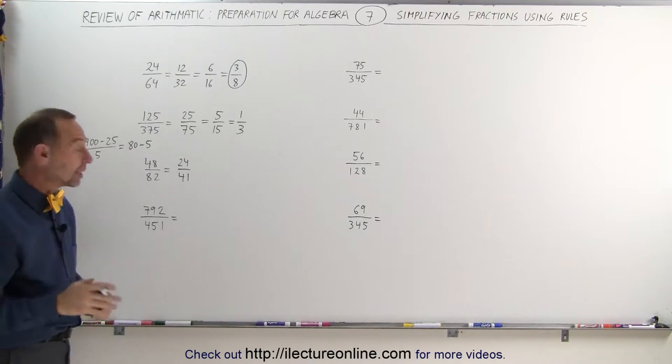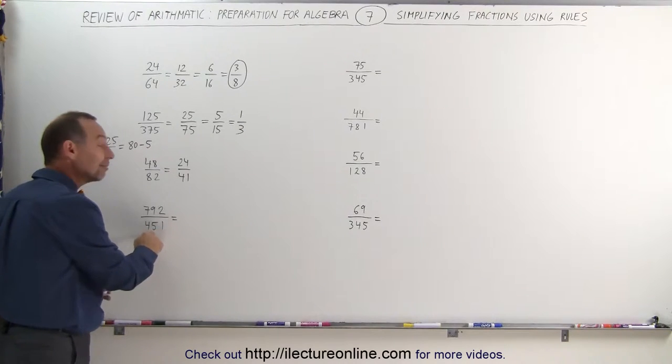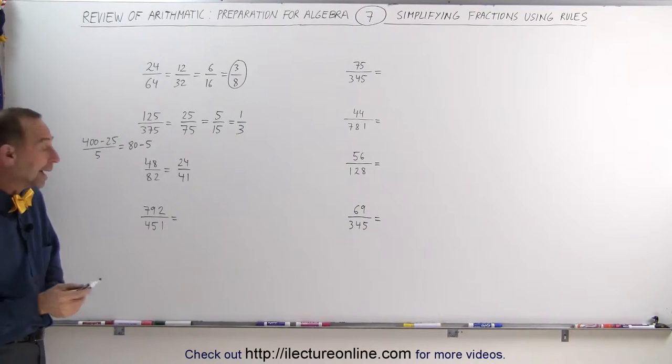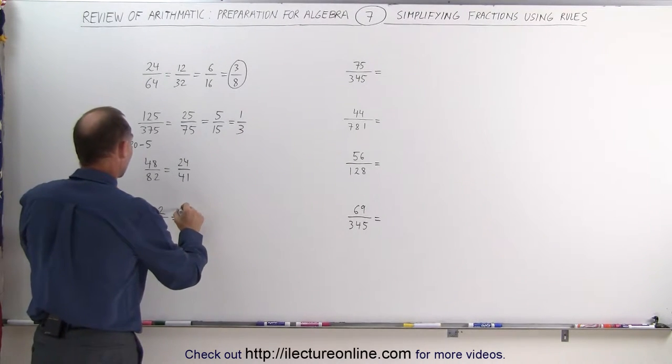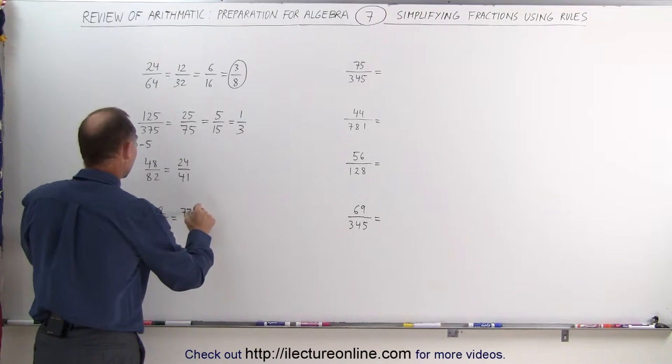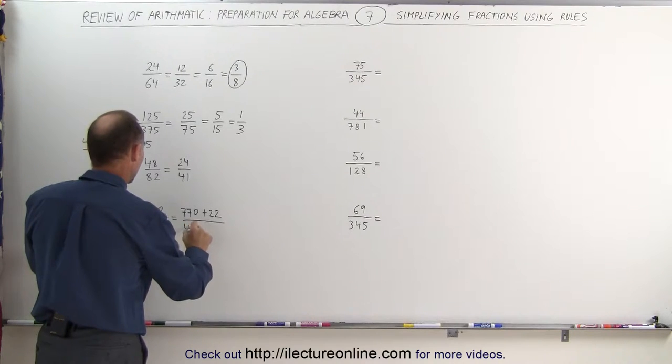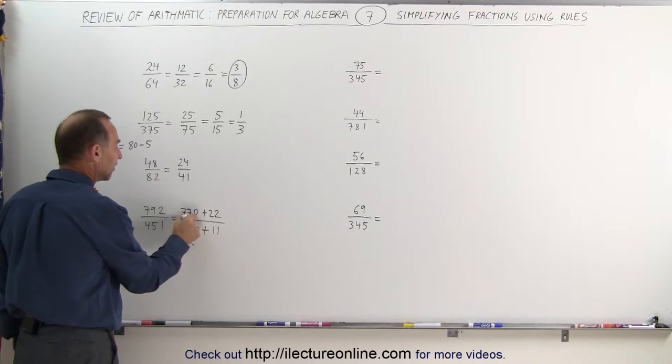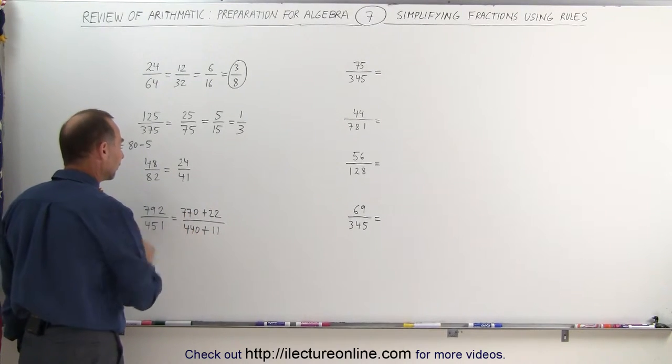So I look at these numbers and I realize that if I add 7 plus 2 together, I get 9. If I add 4 plus 1 together, I get 5, which means that both the numerator and the denominator can be divided by 11. 792 can be written as 770 plus 22, and this can be written as 440 plus 11. Notice when I add 22 to 770, I get 792. If I add 11 to 440, I get 451.